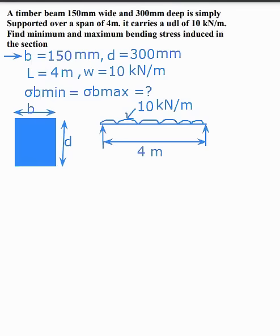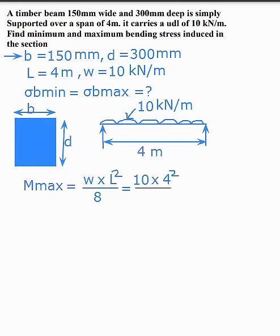First, calculate M max, the maximum bending moment. For a simply supported beam with UDL, M max equals WL² divided by 8. With W equal to 10 and L equal to 4: M max equals 10 × 4² divided by 8, giving M max equal to 20 kN·m.